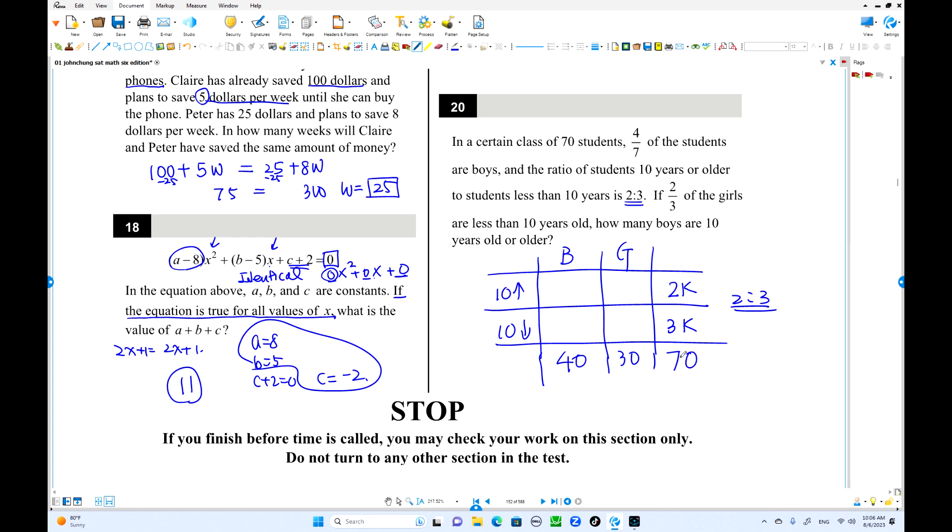But anyway, total is 70 students. From here, we can find the variable k. 5k equals 70, k equals 14. Put this number 14 there. This is 28 students old, 42 students younger. So we have another constraint there. 2 out of 3 of girls are younger. So 30 times 2 over 3 is 20. They are younger. So 20 is over here.